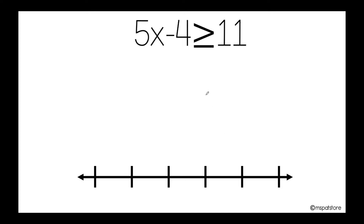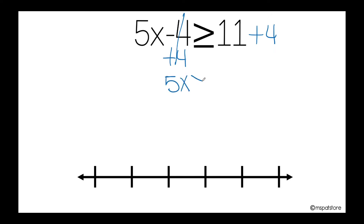As negative 4 is subtracting, I am going to add 4 here and also 4 on the other side of the inequality. So I'm ready to cancel this out. I need to bring down 5x and bring down greater than or equal.